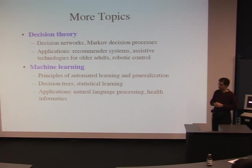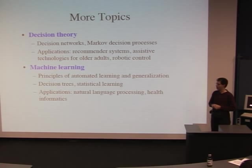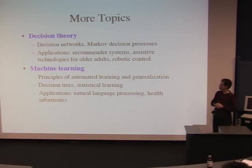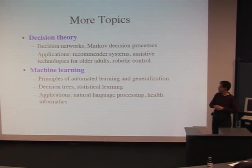Some more topics: decision theory. Once you can reason about uncertainty, you'd like your computer to make the best decisions possible. We get to axiomatize this as well, which leads to models like decision networks and Markov decision processes. These are very useful in lots of applications, especially in operations research, and a lot of companies actually require this sort of technology.